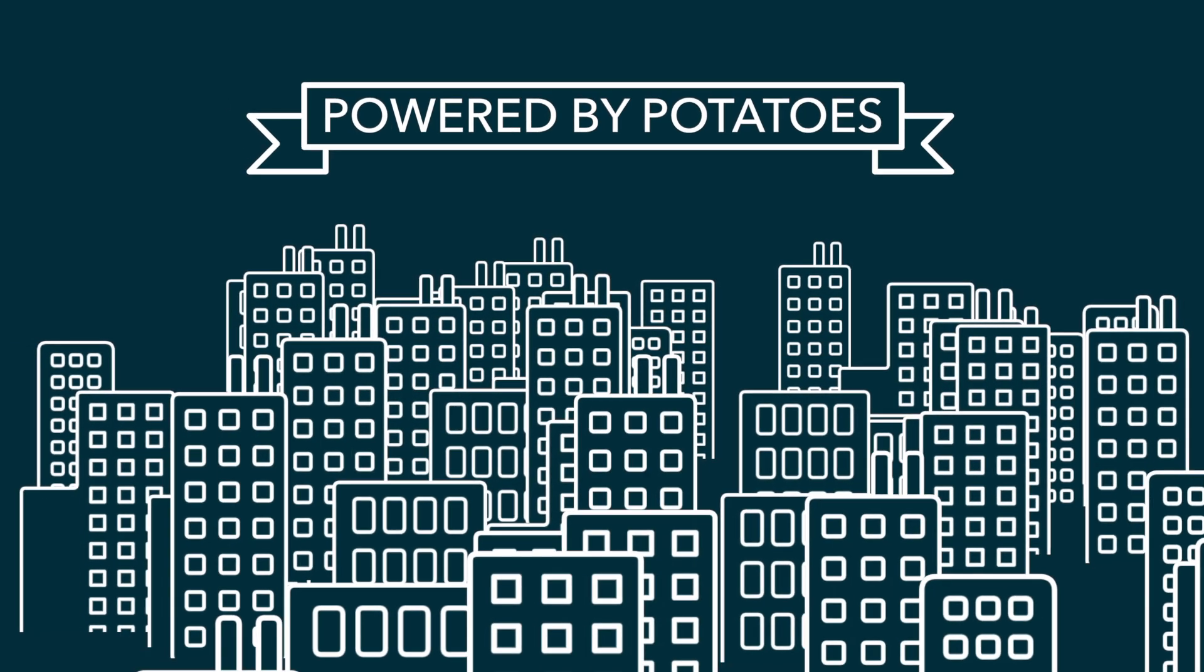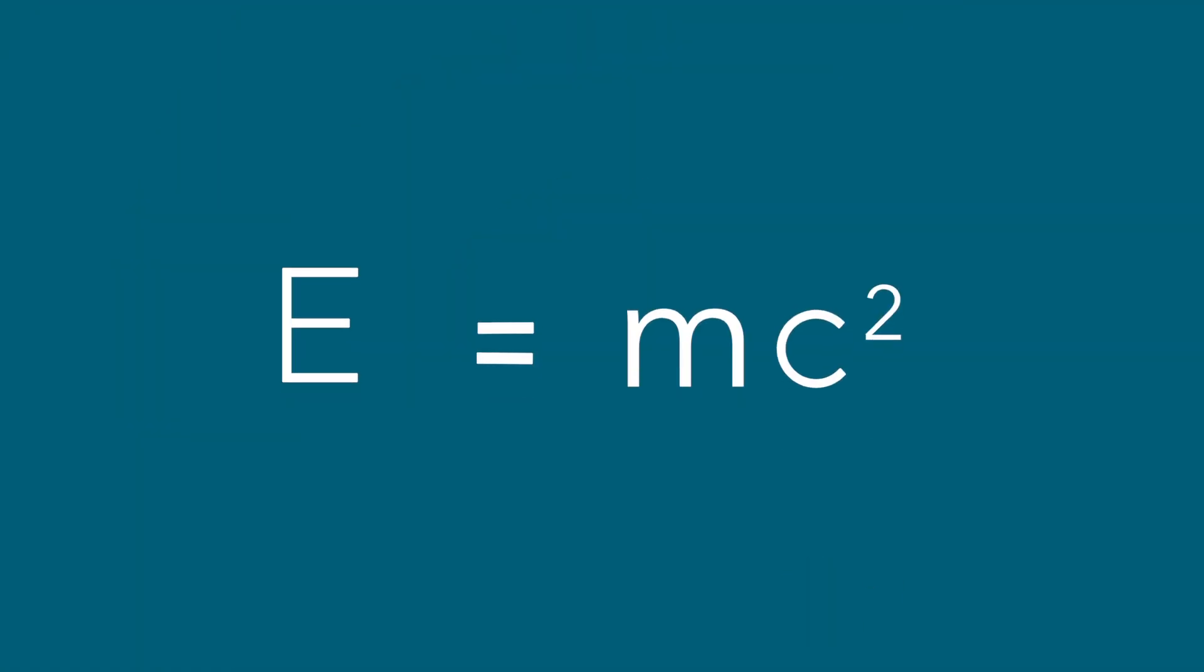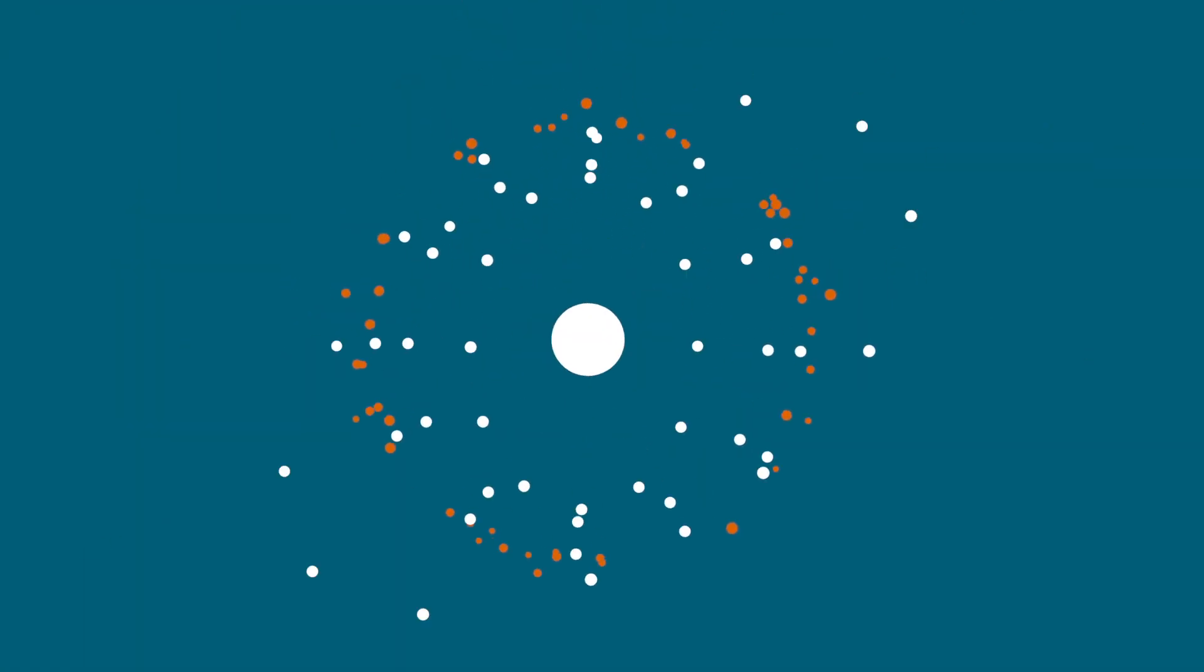And speaking of creating antimatter things, E equals MC squared also means that if you can convert mass into energy, you can do the opposite, too.